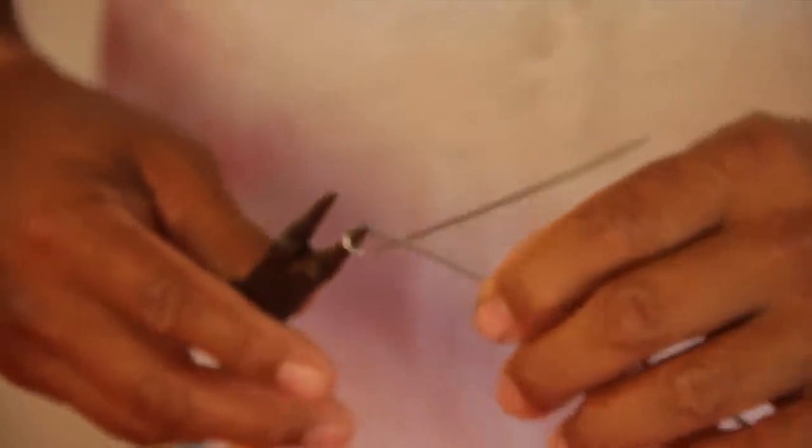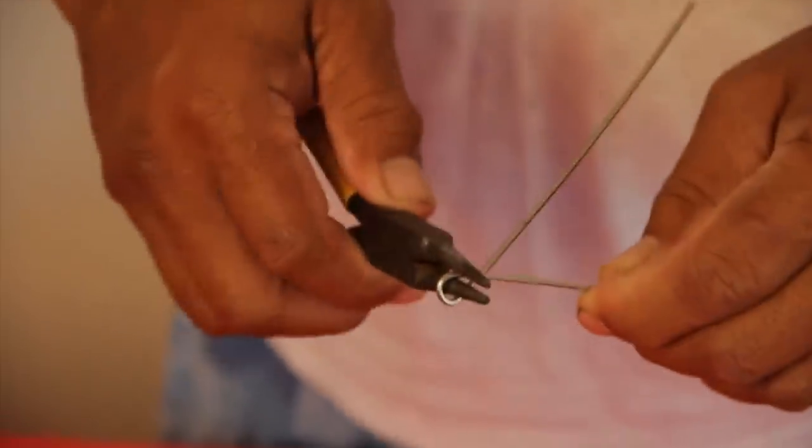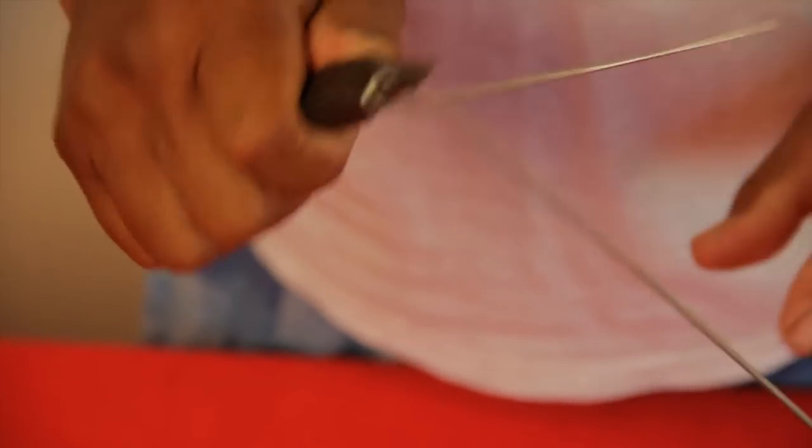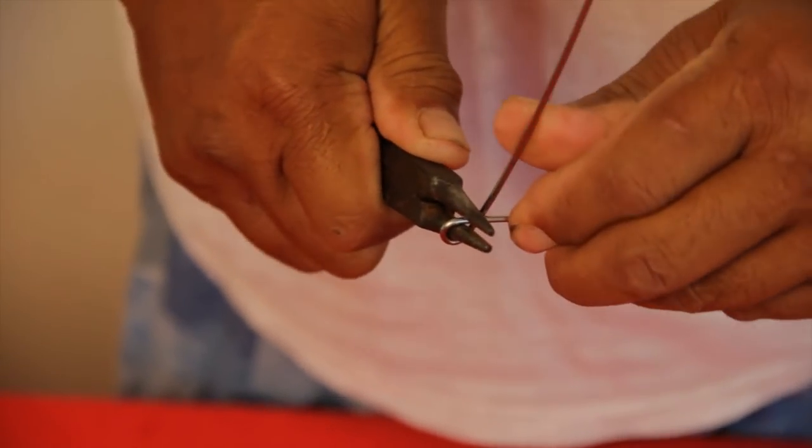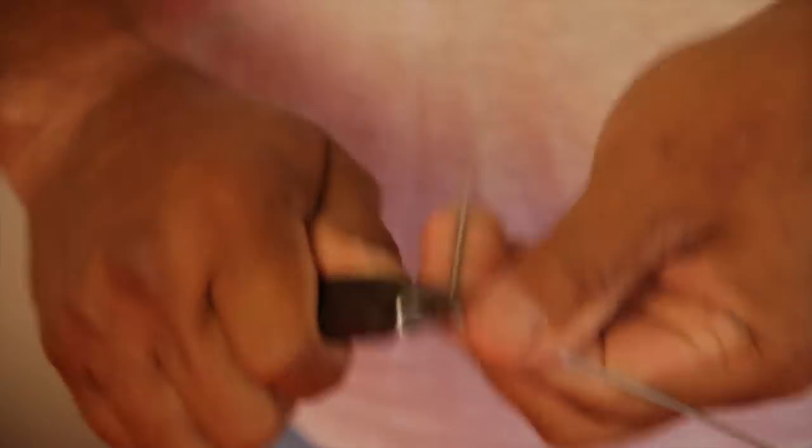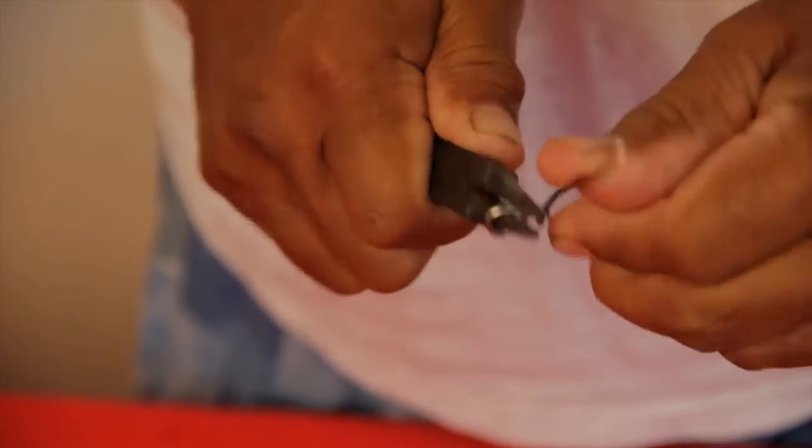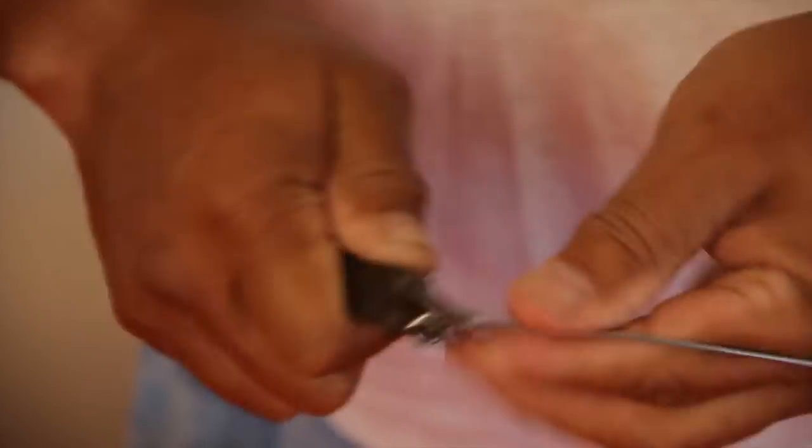Then I take the pliers, and I hold them again, and what I do is, I take the end and I bend them around about 4 times evenly. About 4 times. This guy would never come off.